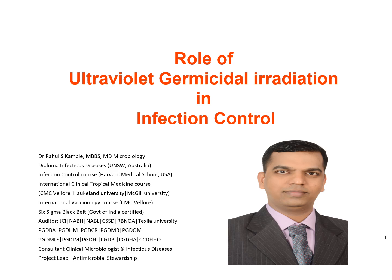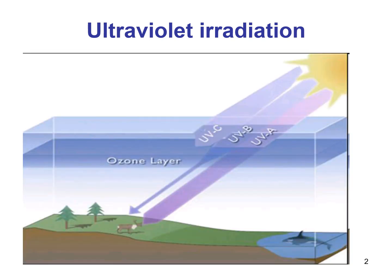Let's learn about the role of ultraviolet germicidal irradiation in infection control. The sun emits three types of ultraviolet rays: A, B, and C. Ultraviolet rays A and B cause skin burns and skin cancer. It is ultraviolet C that is germicidal. The diagram shows that ultraviolet C is stopped by the Earth's atmosphere, meaning sunlight on Earth is not germicidal. Ultraviolet C can be generated artificially by certain lamps to create germicidal irradiation.